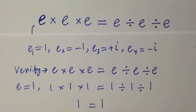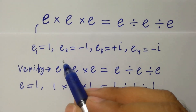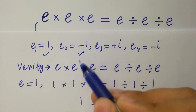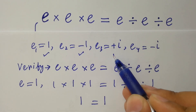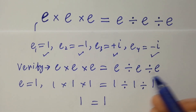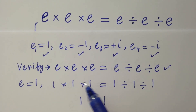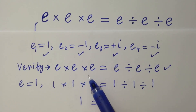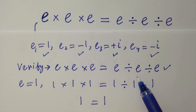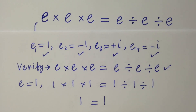This shows that the values e1 equals 1, e2 equals minus 1, e3 equals plus i, and e4 equals minus i all satisfy the equation e times e times e equals e divided by e divided by e. Thanks for watching this video. Please subscribe to this channel to get notifications of my new videos.